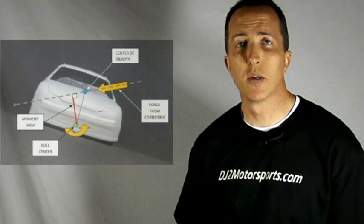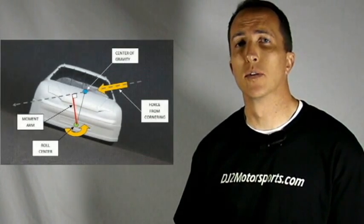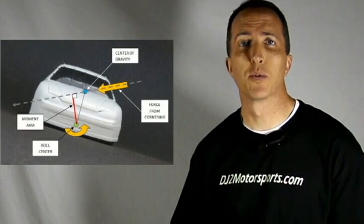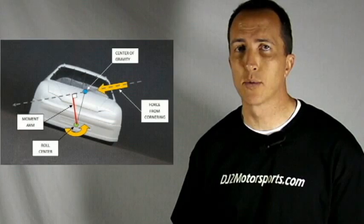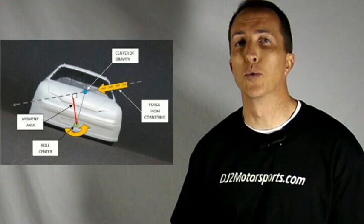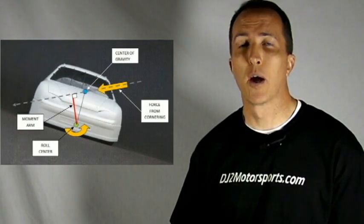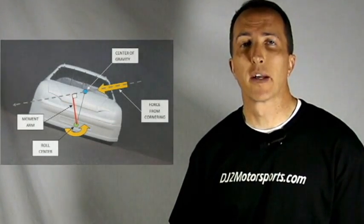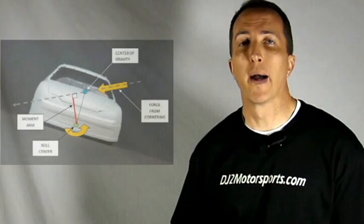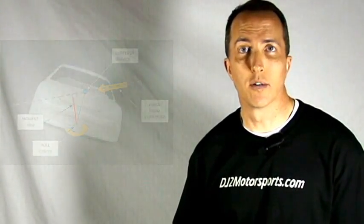So as you can see, we want the center of gravity height and the distance between the center of gravity height and our roll center to be as short as possible, to limit the forces coming in the corner and affecting our body roll by creating that torque on the roll center of our vehicle.